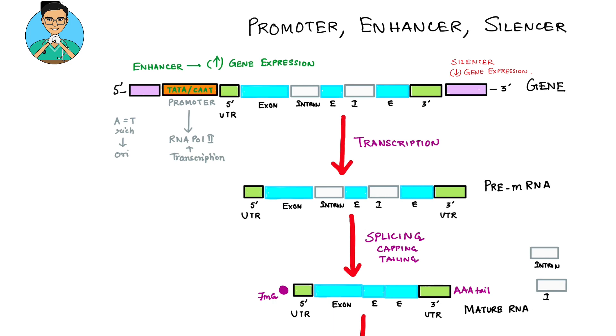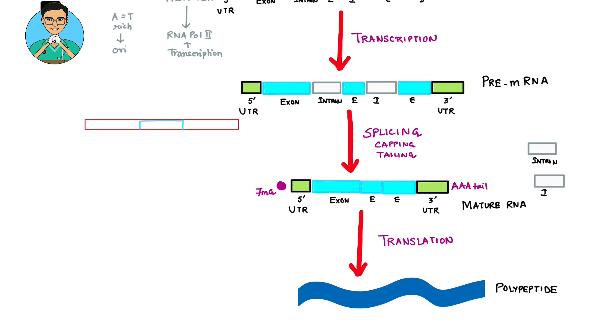The location of enhancers and silencers are not at all fixed within a gene. An enhancer or silencer can be very close to a gene, very far away from a gene, or even within the gene itself. So the location can vary widely.